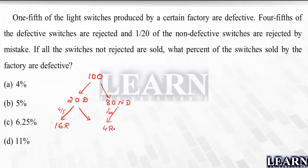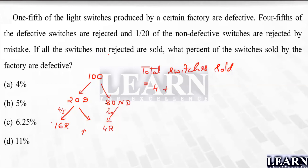If all the switches not rejected are sold, the total switches sold equals defective sold plus non-defective sold. Out of 20 defective, 16 are rejected, so 4 defective are sold. Out of 80 non-defective, 4 are rejected, so 76 non-defective are sold. Total sold is 80.